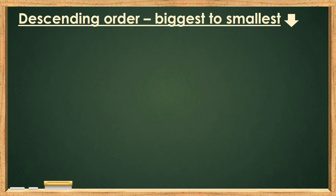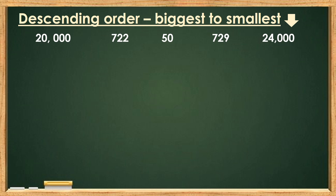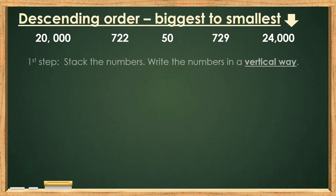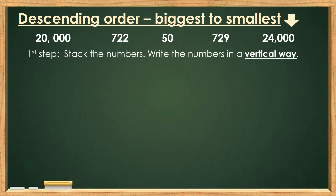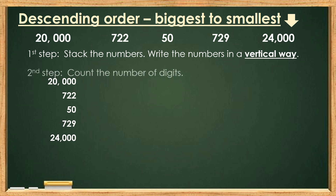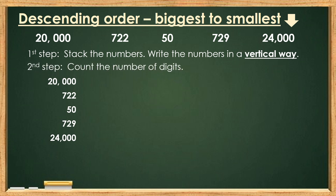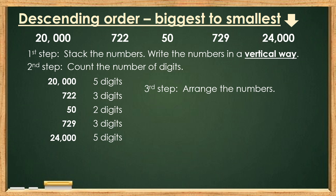Let's look at our third example. Let's arrange the following numbers in descending order. Again, descending means biggest to smallest. Step number 1: Stack the numbers — write the numbers in a vertical way. Step number 2: Count the number of digits. Step number 3: Arrange the numbers.